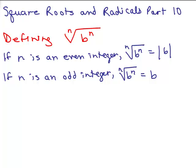This is part 10 of Square Roots and Radicals. In earlier videos we defined the nth root of b to the n where b was a non-negative number. Now we're going to be a little more general.